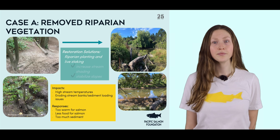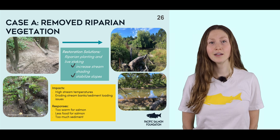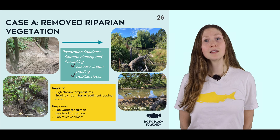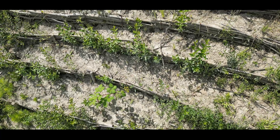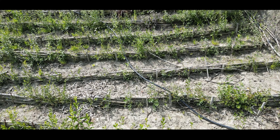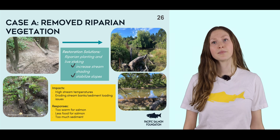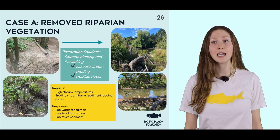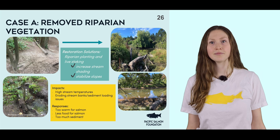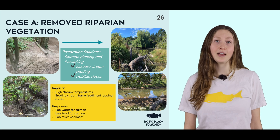As restoration ecologists, we could focus on replanting the riparian area to increase stream shading and stabilize the banks, which will also help water temperature. One method sometimes used is called live staking, where cuttings of trees like red osier dogwood and black cottonwood are stuck into the sediment at the stream banks. Cuttings of these trees will naturally take to the soil and drink up water from the stream to grow into full grown trees, providing shade and stabilizing the bank with their roots.